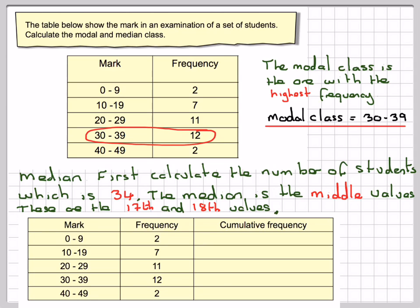Then if we add an extra column to our table, which is called cumulative frequency, the first one here will be 2. The next one will be 2 plus 7, which gives me 9, so we're adding up the frequencies. The next one will be 2 plus 7 plus 11, which is 20. The next one will be 2 plus 7 plus 11 plus 12, which is 32. And the final one will be 2 plus 7 plus 11 plus 12 plus 2, which is 34.